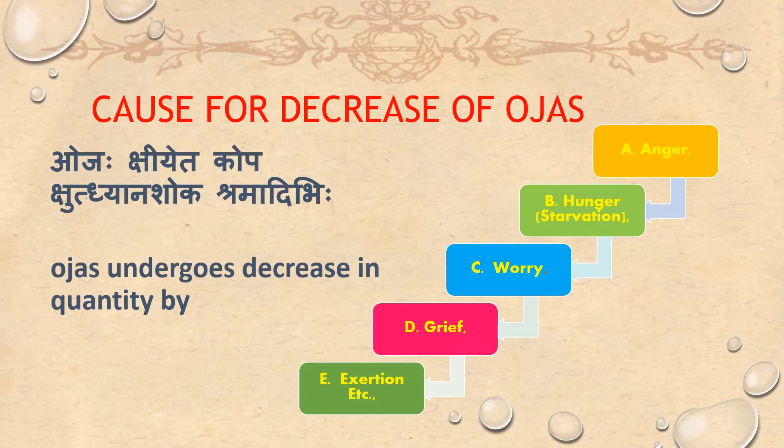Cause for decrease of Ojas — Ojaha Kshiyeta: Krodha (anger), Shudha (hunger), Dhyana (worry/anxiety), Shoka (grief), Sramadhi (exertion), and other causes. Ojas undergoes decrease in quantity by anger, hunger, worry, grief, and exertion.